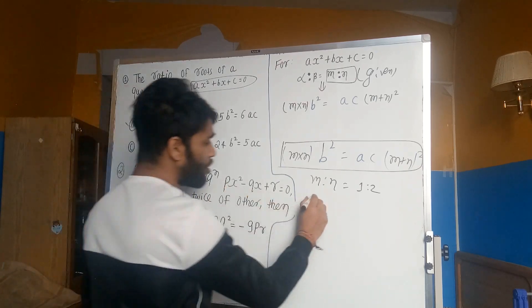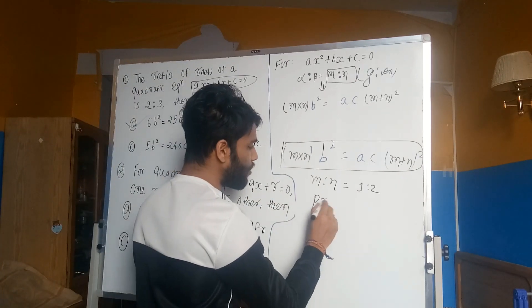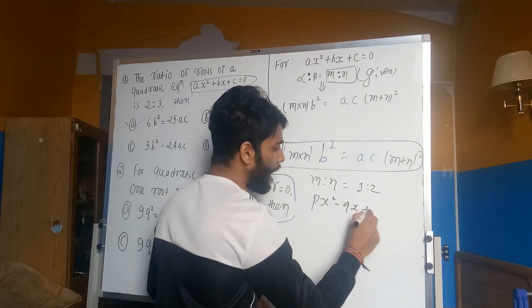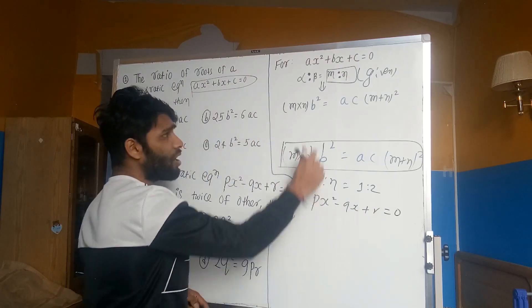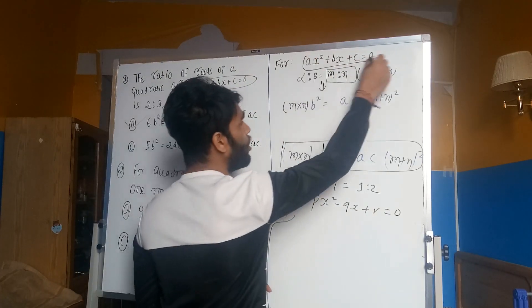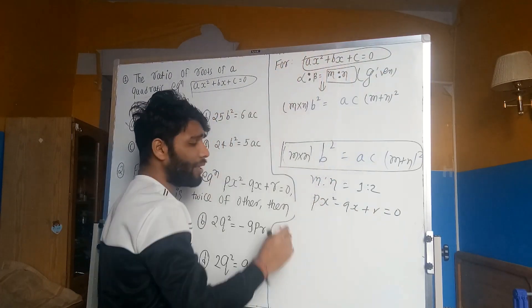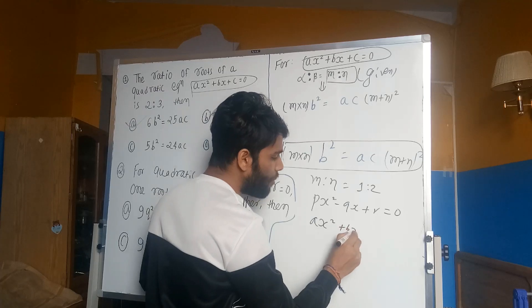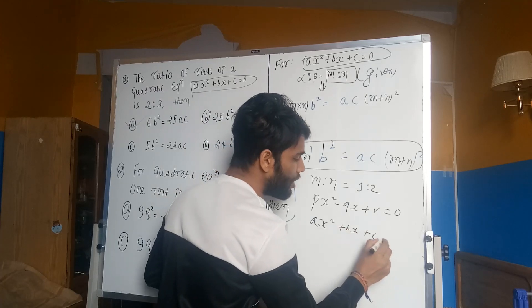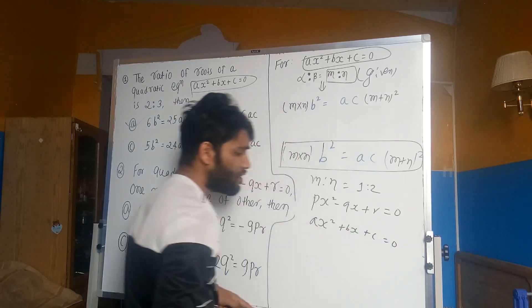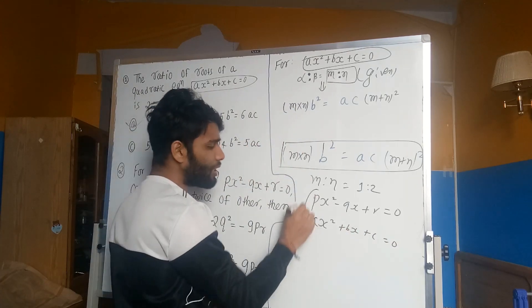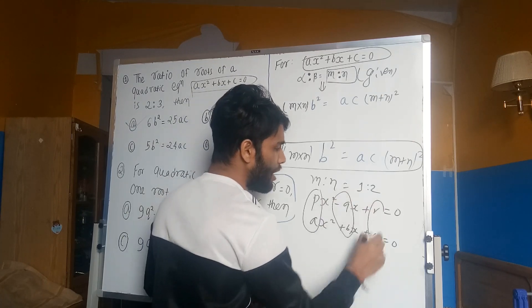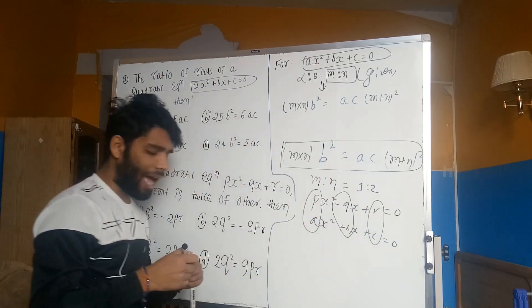The equation Q is Px² - Qx + R = 0. Comparing with X² + Bx + C = 0, here we have A equal to P, B equal to minus Q, and C equal to R.